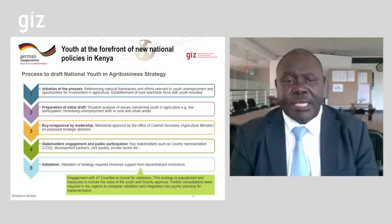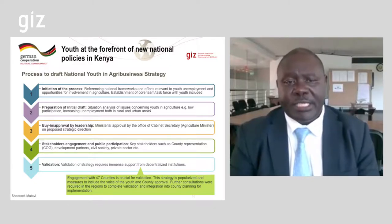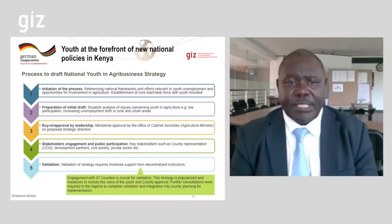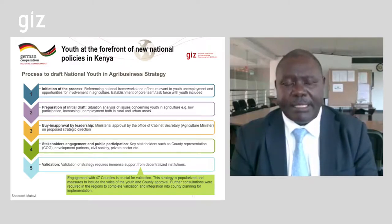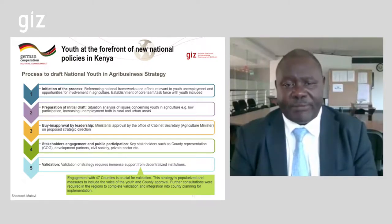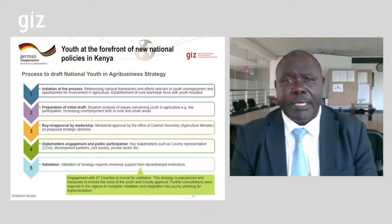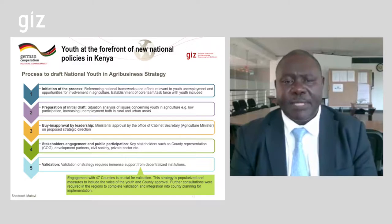I want to take you through the process by which the National Youth Agribusiness Strategy was developed — the processes of policy development. The first step was the initiation process: gathering data and information on what has been done. A multidisciplinary task force is usually established at this point so that all relevant information is brought together. Then, after the initiation process, an initial draft is compiled. This initial draft not only addresses foreseeable problems but also proposes actions to improve the standards of the youth, especially in terms of employment.